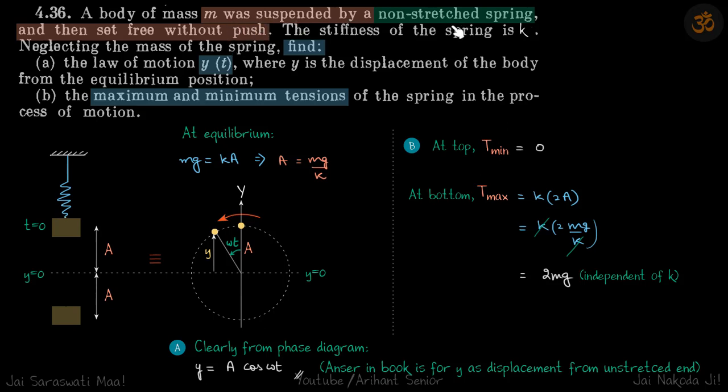A mass is suspended by a non-stretched spring and then set free without push. Find Y as a function of time and maximum and minimum tensions of the spring. So here it is unstretched, so immediately you can imagine minimum tension will be zero. But anyway, after the mass is let go, it will start to perform SHM.